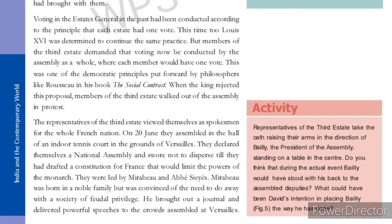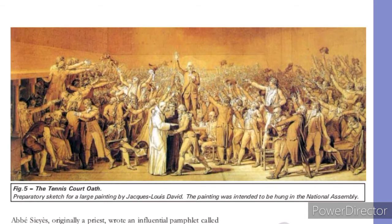They were led by Mirabeau and Sieyes. Mirabeau was born in a noble family but was convinced of the need to do away with a society of feudal privileges. He brought out a journal and delivered powerful speeches to the crowds assembled at Versailles. The second leader, Sieyes, wrote an influential pamphlet called 'What is the Third State?'